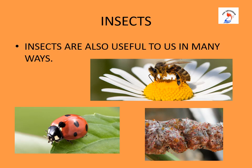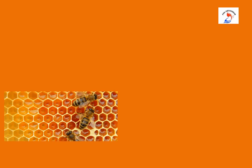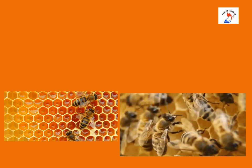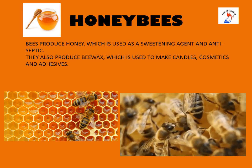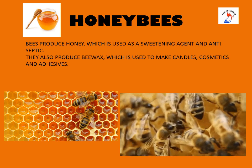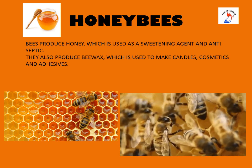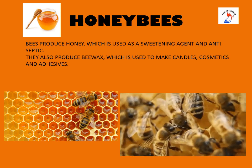Now we will talk about insects, which are also useful to us in many ways. You can see honey bees, ladybird beetles and lac insects. Honey bees are very interesting and active insects; they live in a nest called a beehive that consists of honeycombs. Honeycombs are six-sided compartments where honey is stored. A beehive is home to about 50,000 bees. Bees produce honey, which is used as a sweetening agent and antiseptic. They also produce beeswax, which is used to make candles, cosmetics and adhesives.